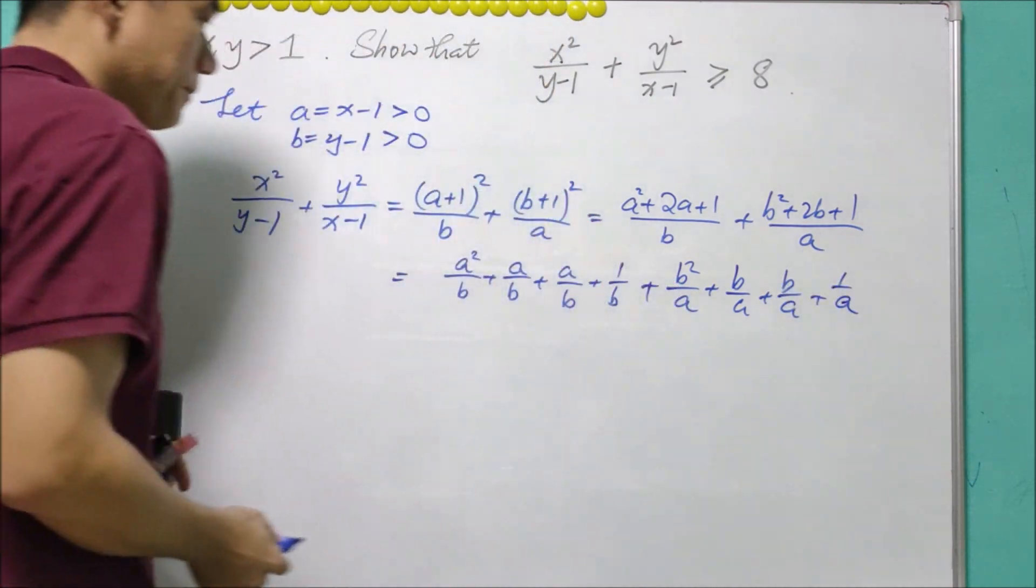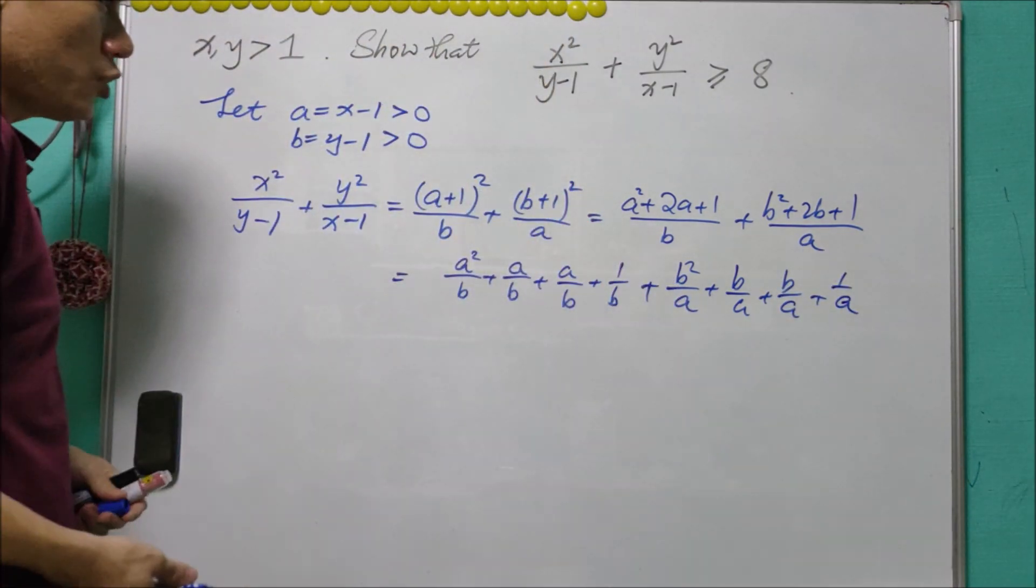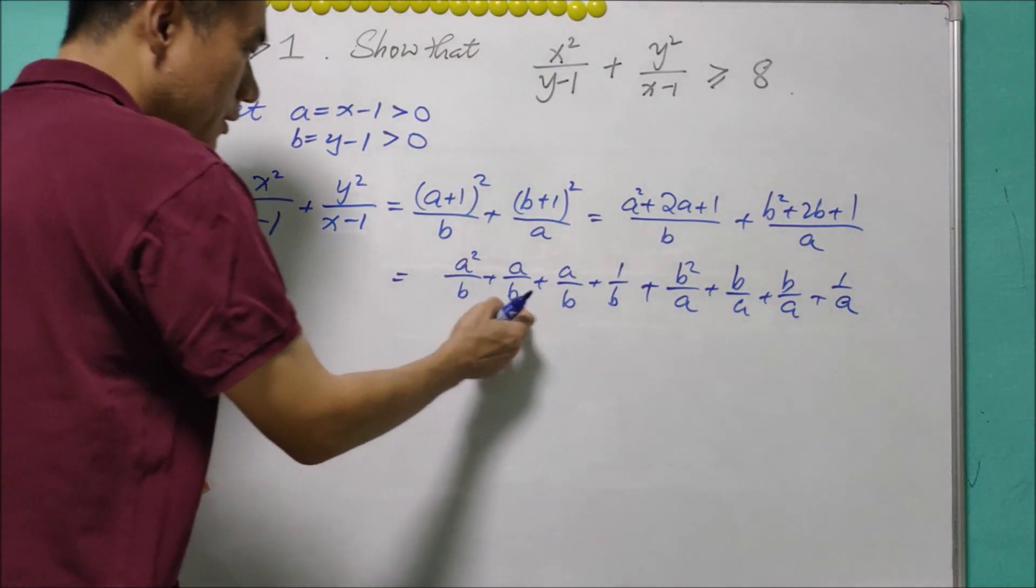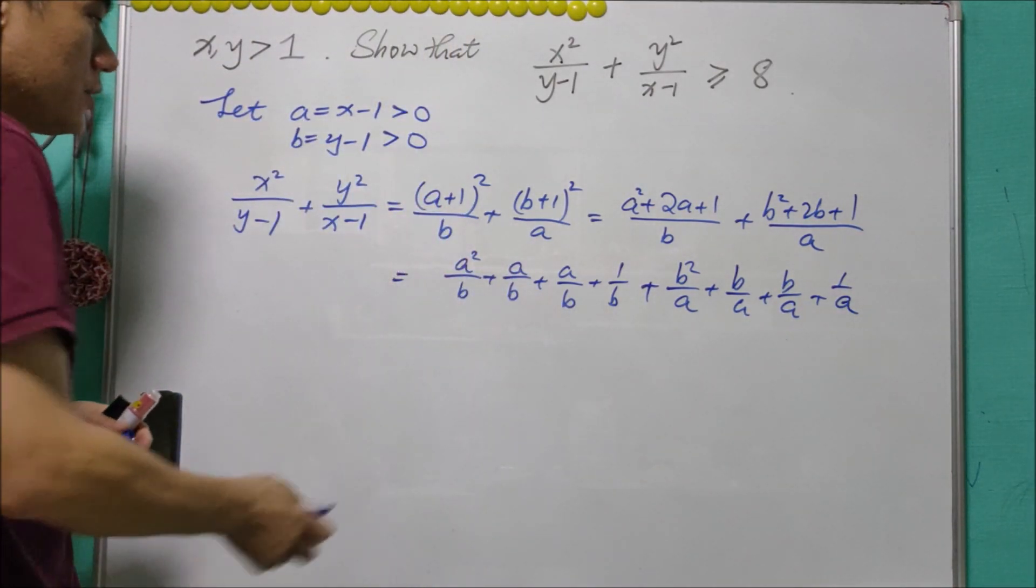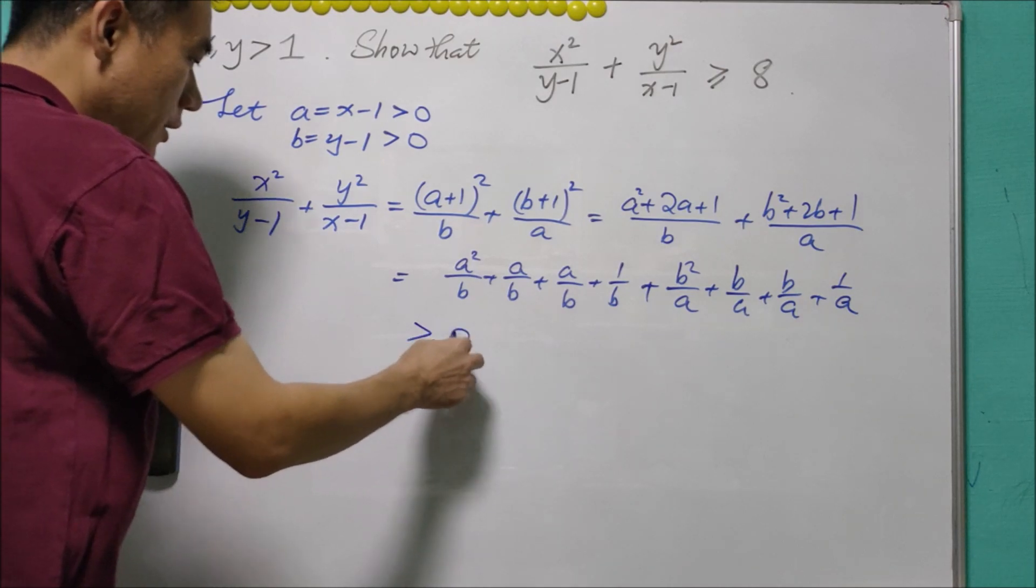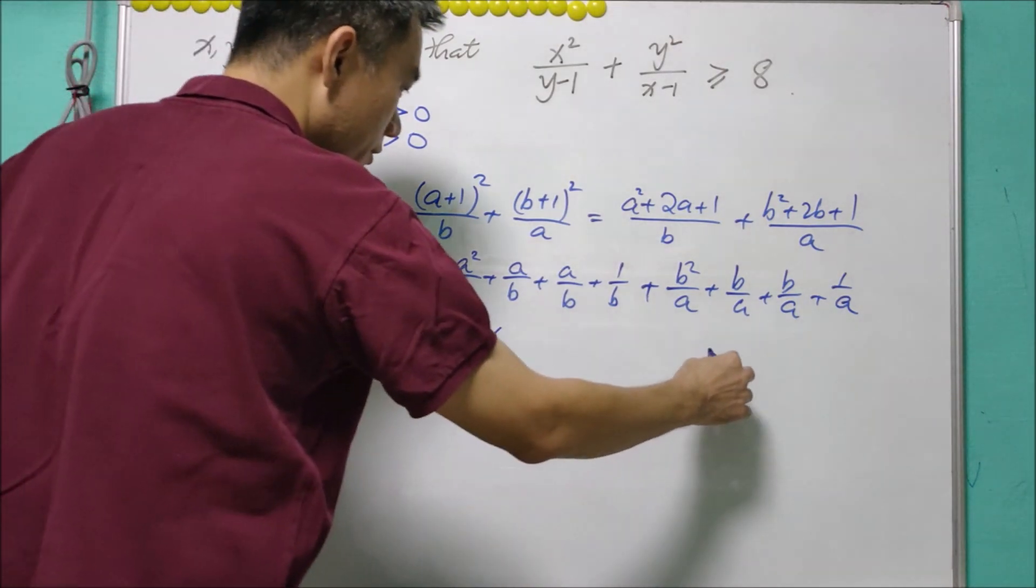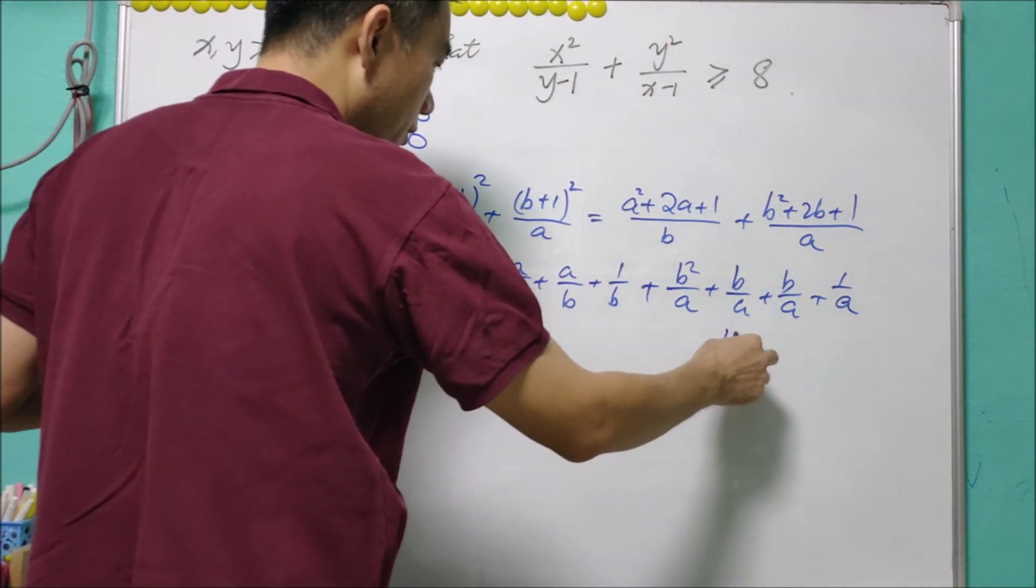Using AM-GM inequality, we have 8 terms all together, and each of these is positive, so this is greater than or equal to 8 multiplied with the product of everything to the power of 1/8.